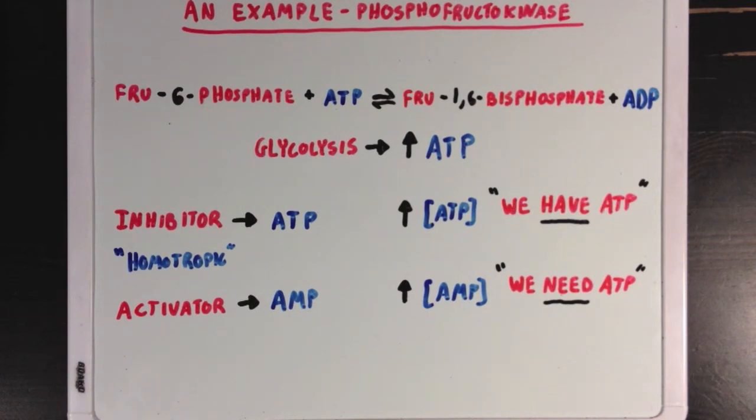Since AMP is a regulating molecule, but not an active site substrate for phosphofructokinase, it would be considered a heterotropic activator, since the substrate and regulator are different.